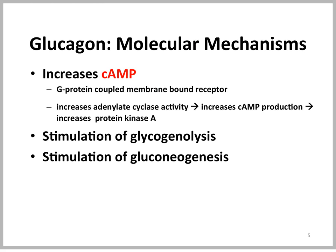Glucagon increases cyclic AMP through a G-protein-coupled membrane receptor. It increases adenylate cyclase activity, and this increases cyclic AMP production, which in turn leads to increases in protein kinase A. So the result is we have stimulation of glycogenolysis with glucagon through this mechanism, and we have stimulation of gluconeogenesis.